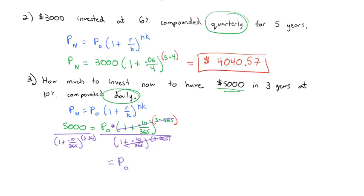And when we do this on our calculator, again being careful with parentheses, closing parentheses in the right place, putting the entire exponent in parentheses, we find $3,704.24 is required right now to be invested at 10% compounded daily for three years to have $5,000 in the account at the end.